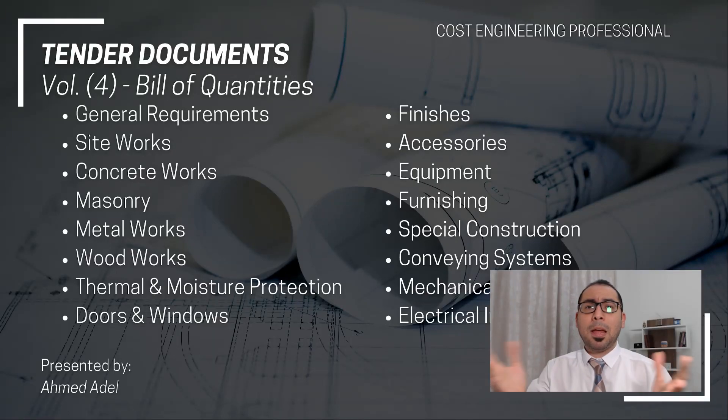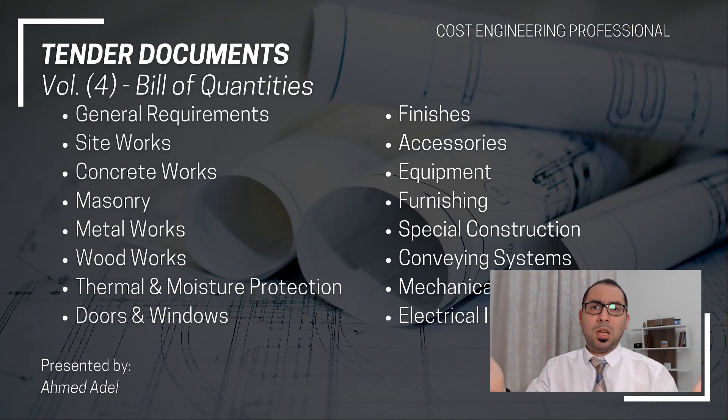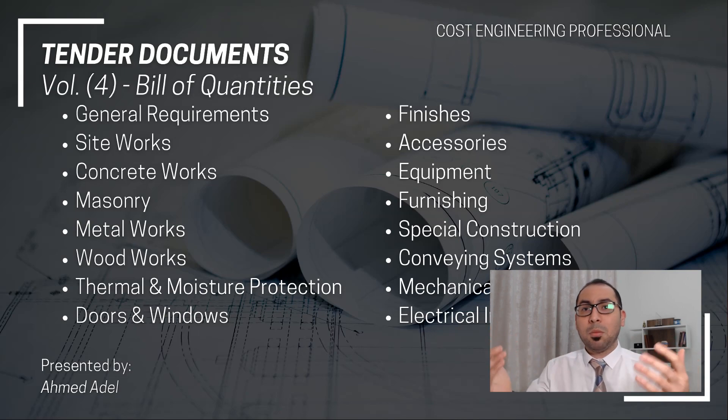Volume four is the bill of quantities. The BOQ includes several sections: general requirements, site works, concrete works, masonry, metal works, wood works, thermal and moisture protection, doors and windows, finishes, accessories, equipment, special construction, conveying systems, and mechanical and electrical installations. Inside each section you will find items measured from the project drawings (volume three), with descriptions referencing the specifications (volume two) and any relevant conditions of contract. The BOQ is where you price the project and is a major part of your tender submission.